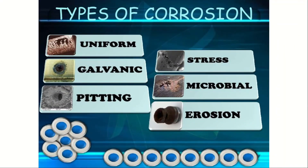Different types of corrosion: galvanic, stress, microbial, and erosion. These are the different kinds of corrosion which happen on the exterior of metals in industries, shipbuilding industries, automobile industries, etc.